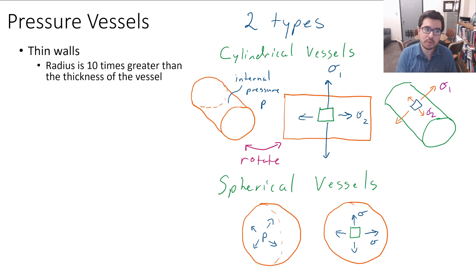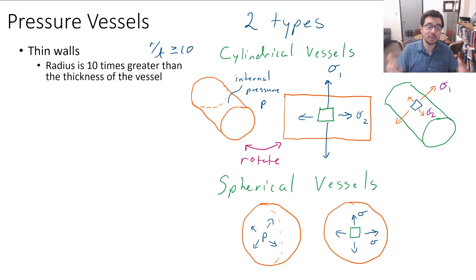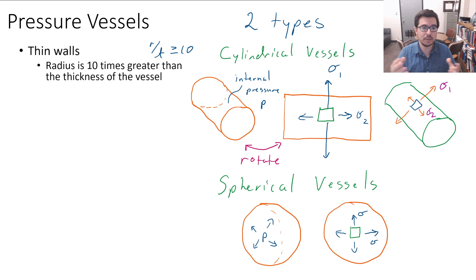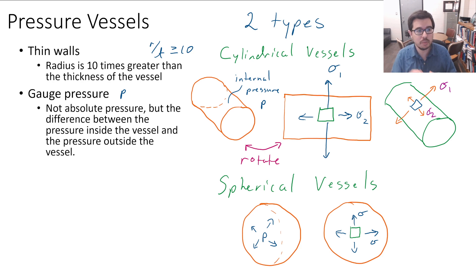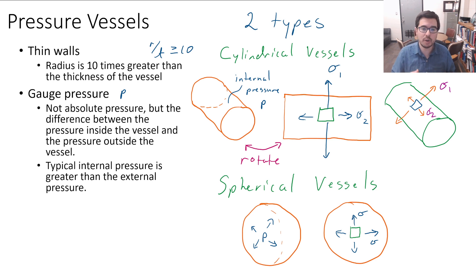Some characteristics of pressure vessels: they have thin walls, meaning the radius is 10 times greater than the thickness of the vessel. There are thick-walled pressure vessels, but we're not going to discuss those derivations here — we assume thin walls. Another important term is gauge pressure, often represented as P. This is not an absolute pressure but the difference between the pressure inside the vessel and the pressure outside. Typically, the internal pressure is greater than the external pressure.